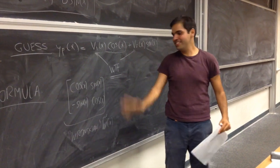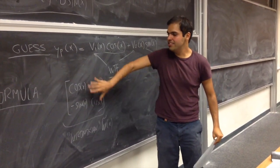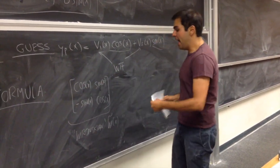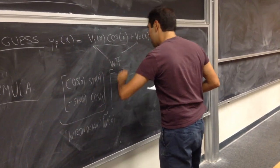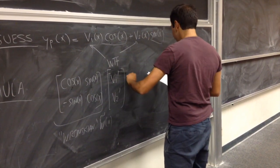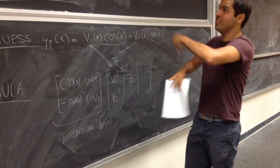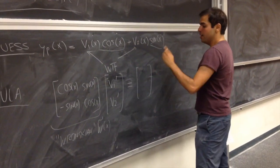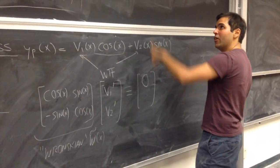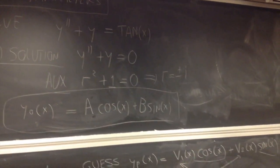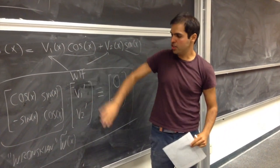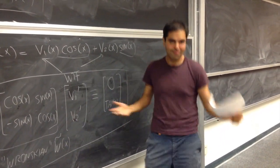Technically the Wronskian is the determinant of that matrix, but I'll call this the Wronskian matrix. The matrix equation is: W̃(x) applied to the vector [v1', v2']ᵀ equals the vector [0, tan(x)]ᵀ — everything is zero except for the last term, which is our tangent. That's our formula, and we want to solve for v1 and v2.